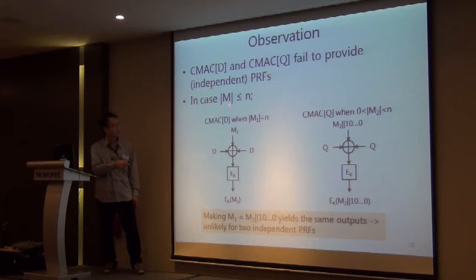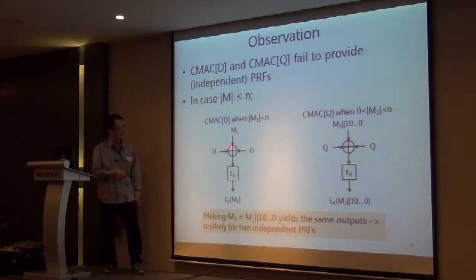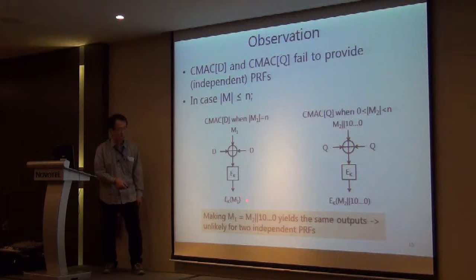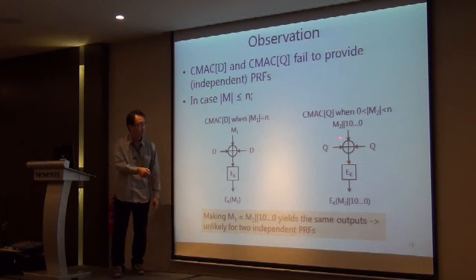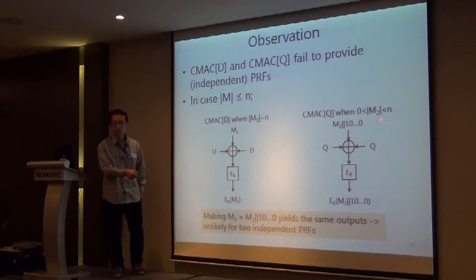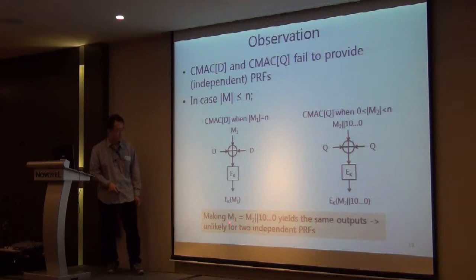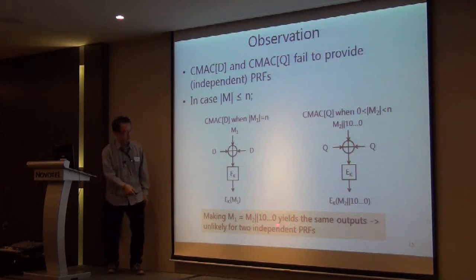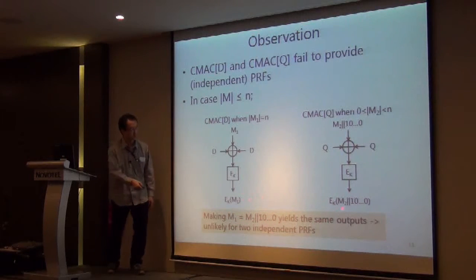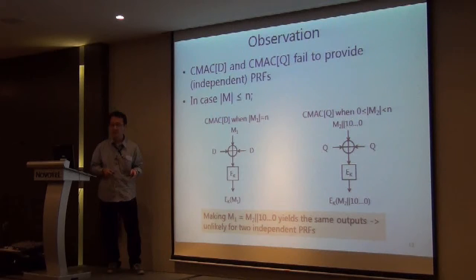If the input is only one block: for CMAC-D accepting an N-bit input block, the initial masking and final masking values are the same and cancel, so the output is E_K(M1). For CMAC-Q with a short input requiring padding, the initial and final masking values are again the same and cancel, giving output Q. By crafting M2 to satisfy this condition, these outputs become equal — which would be very unlikely if the two functions were independent random functions.